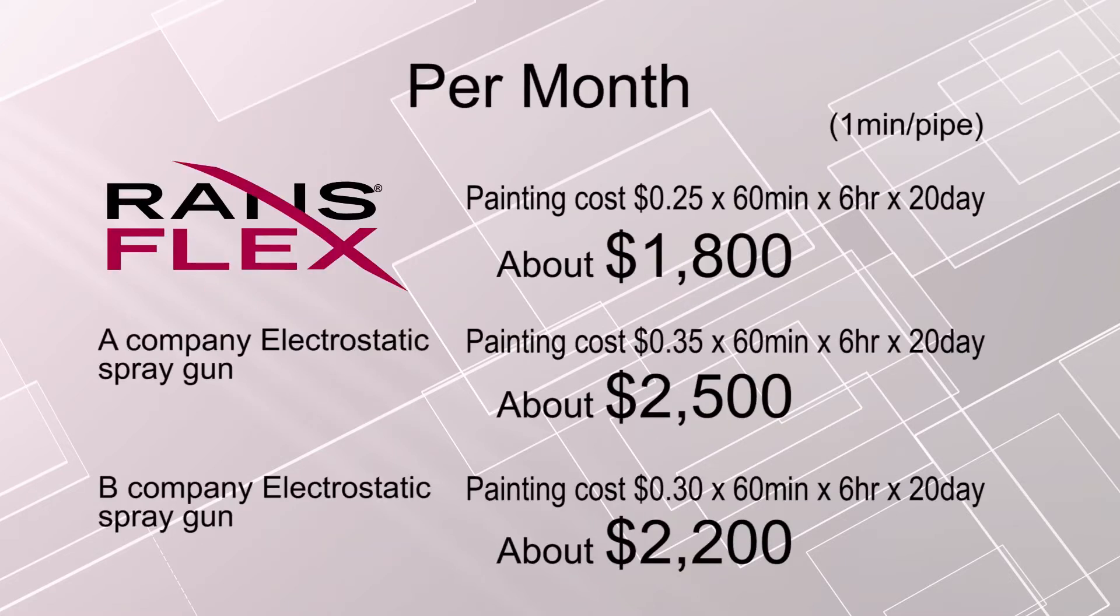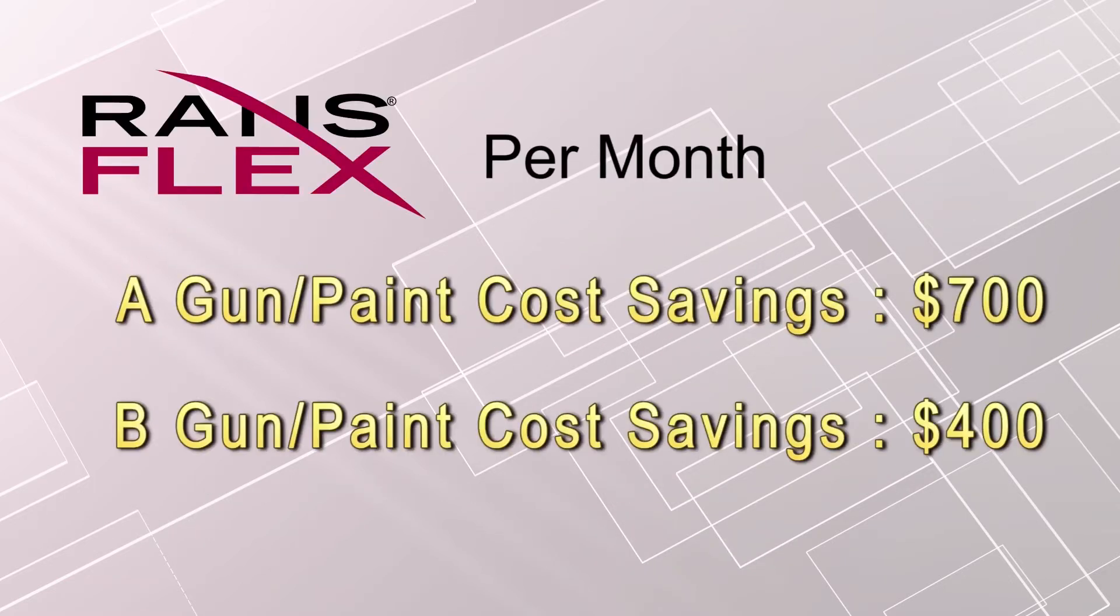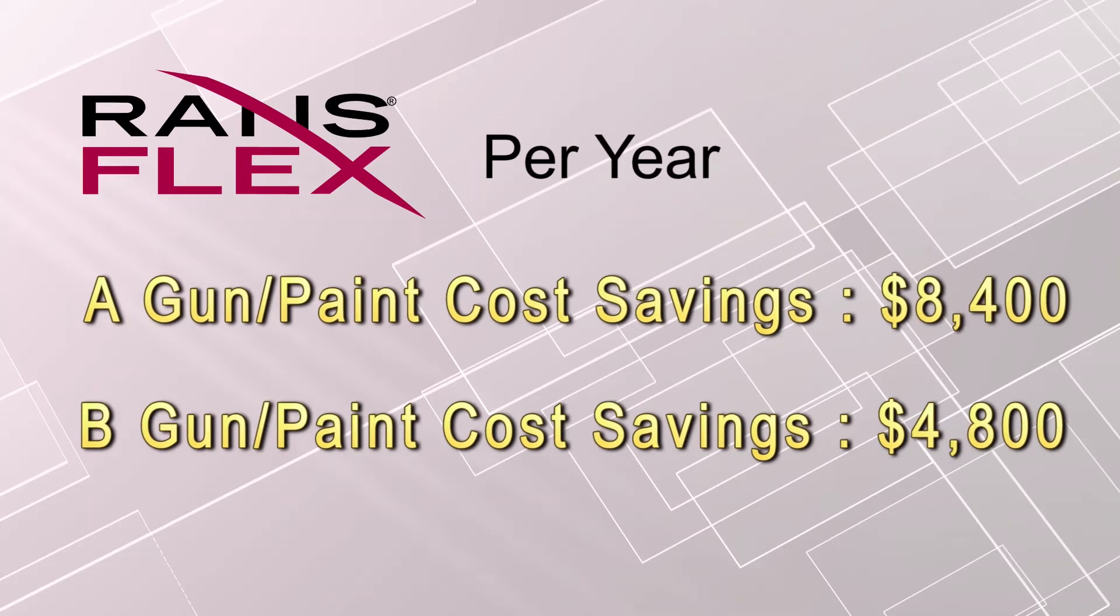Let's calculate one year material savings. It takes about one minute to finish painting for this pipe, 6 working hours a day, 20 business days per month. RansFlex costs you 1,800 US dollars a month. Brand A, 2,500 US dollars a month. Brand B, 2,200 US dollars a month. You can save from 400 to 700 US dollars a month, from 4,800 to 8,400 US dollars a year for material costs with RansFlex.